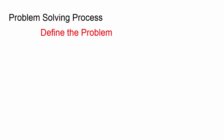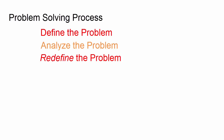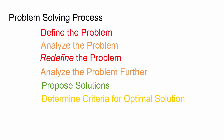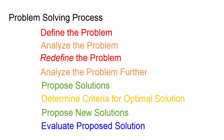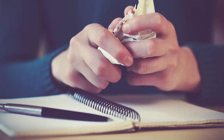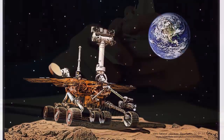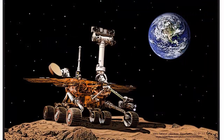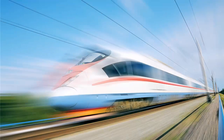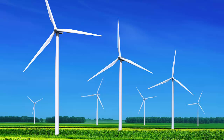Despite the formal process outlined above, in reality, problem-solving is a messy, nonlinear, iterative process that involves failing, learning from mistakes, and overcoming challenges. Problem-solving isn't easy. You have to pay attention, you will make mistakes, and you are likely not going to get it right the first time. You have to have persistence and test your solutions to know when your solution works. You also have to accept that there may not be just one right solution to the problem.